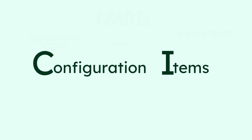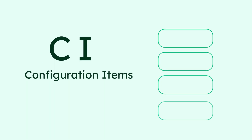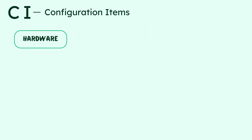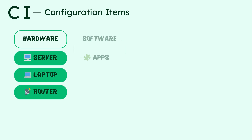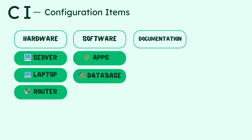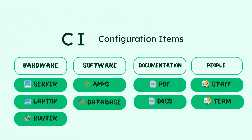First and foremost, Configuration Items, or CIs — the building blocks of a CMDB. A CI is any IT component that needs to be tracked: physical hardware like servers, laptops, or routers; software like applications or databases; or even documentation and people across departments. Basically, if it's part of your IT environment, it's probably a CI.